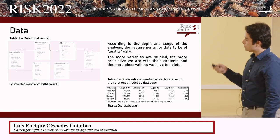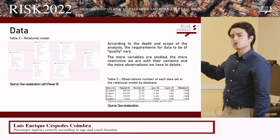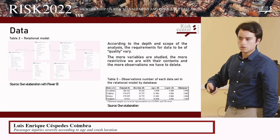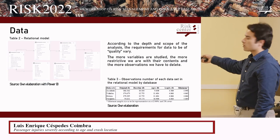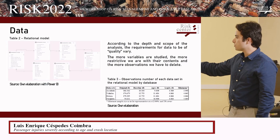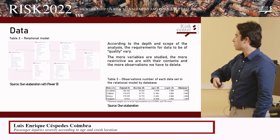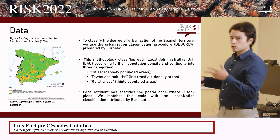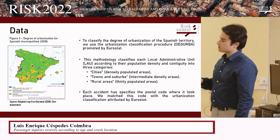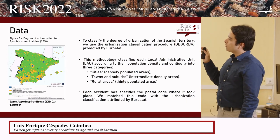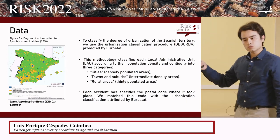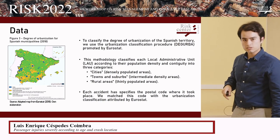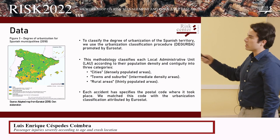Depending on the level of analysis, we had to be more restrictive as the definition of quality data changed, but in all cases we were above a minimum threshold to have our data considered representative at a 99% confidence interval and 2% error. For the Eurostat dataset on degree of urbanization, we used their classification which categorizes municipalities into three groups — cities, towns and suburbs, or rural areas — based on contiguity and population clusters, matched to accident locations via postal code.